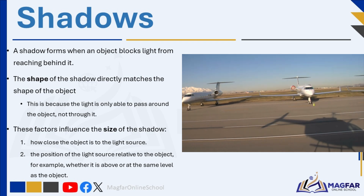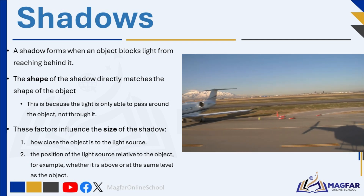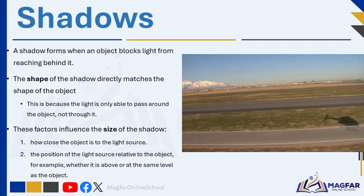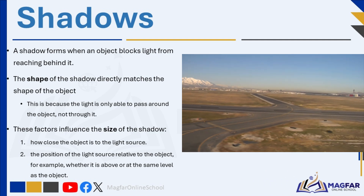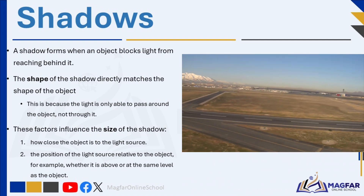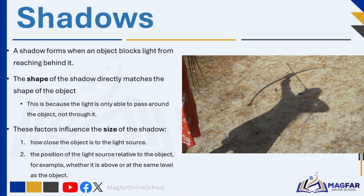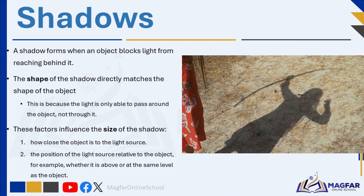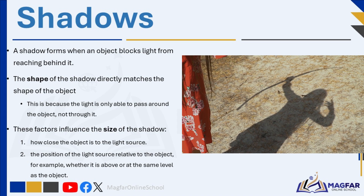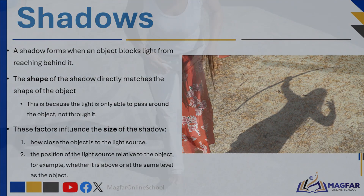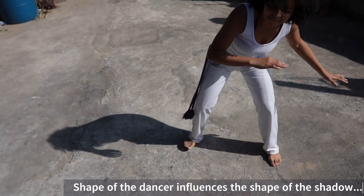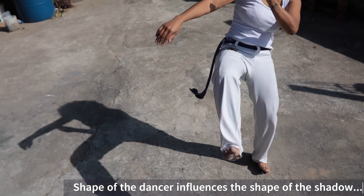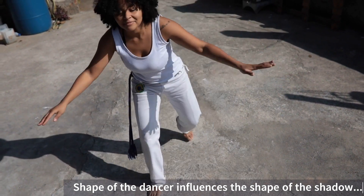Shadows are formed because light travels in straight lines and opaque objects do not transmit light. Light is needed to form a shadow, and a shadow shows the shape of an object. The parts of the object that block the light prevent it from passing through, creating a dark area. The shape of the shadow directly matches the shape of the object because the light can only pass around the object, not through it — formed by light rays that pass the edges of the object.